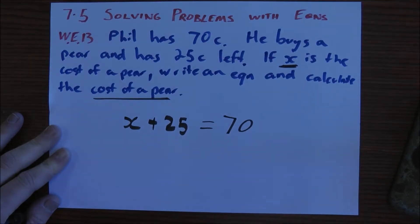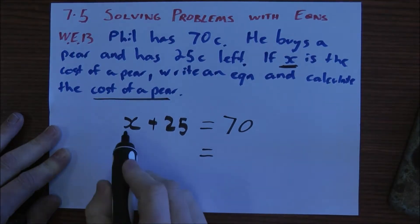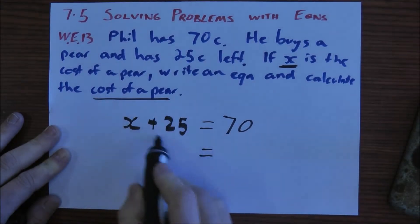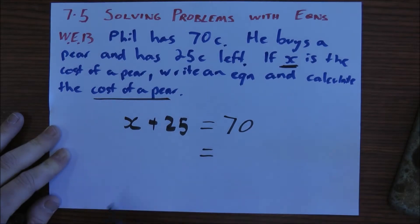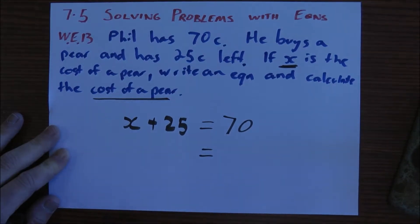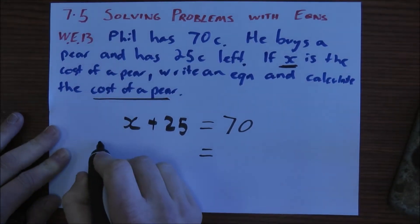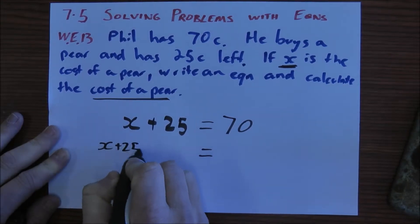So we're buying a pear and we've got 25 cents left over out of 70 cents that we started with. Now we've got our equation. We need to solve this. I want X on its own. I want to get rid of this part here and get it over that side. This is a plus 25.